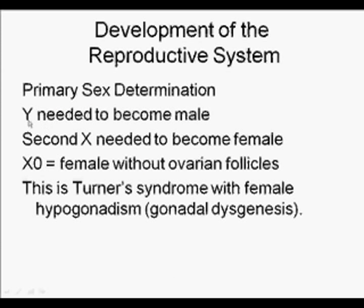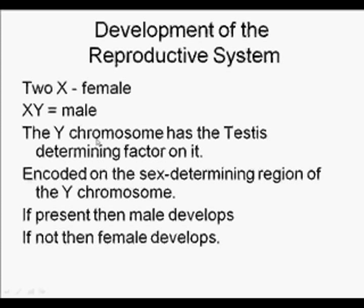Primary sex determination requires the Y chromosome and its testis-determining region. It also became apparent that a second X chromosome was needed to become fully female, because XO individuals are female in phenotype but lack ovarian follicles — they have gonadal dysgenesis. These XO individuals have Turner Syndrome; they can have a female phenotype without development of ovarian follicles. So two X's determines female, XY determines male, with the sex-determining region of the Y driving male phenotype development.